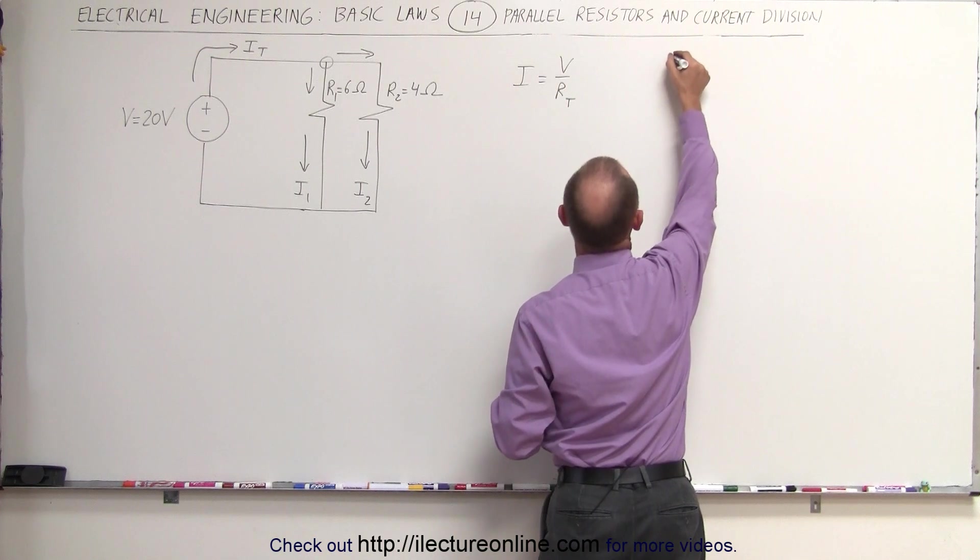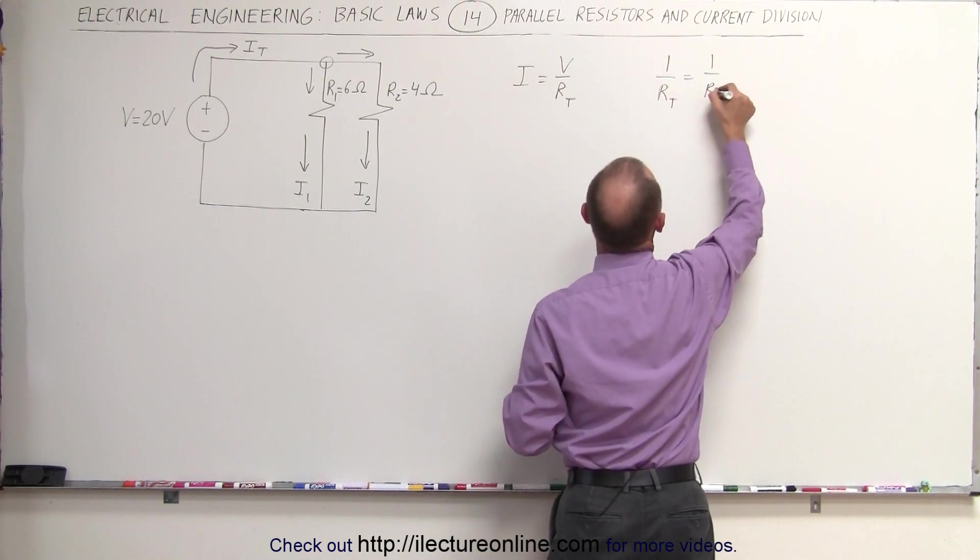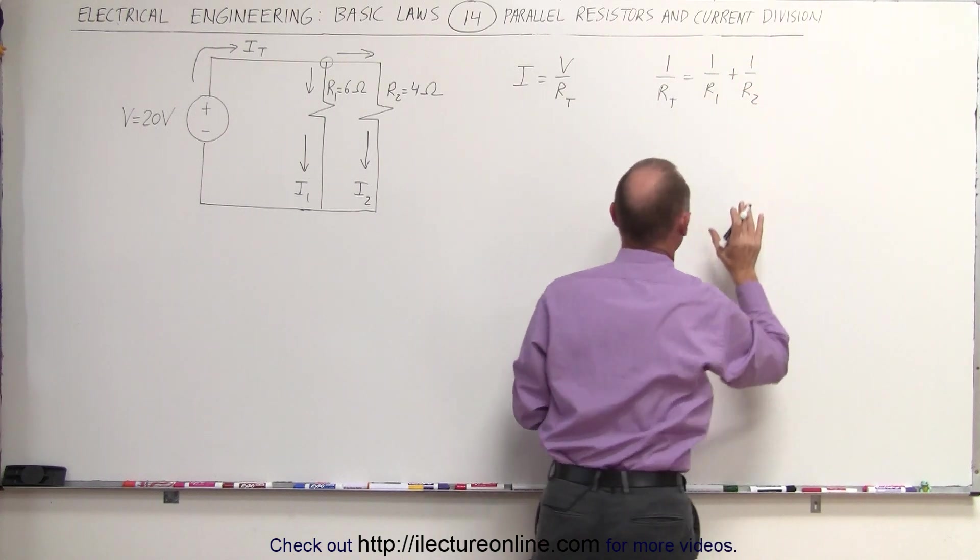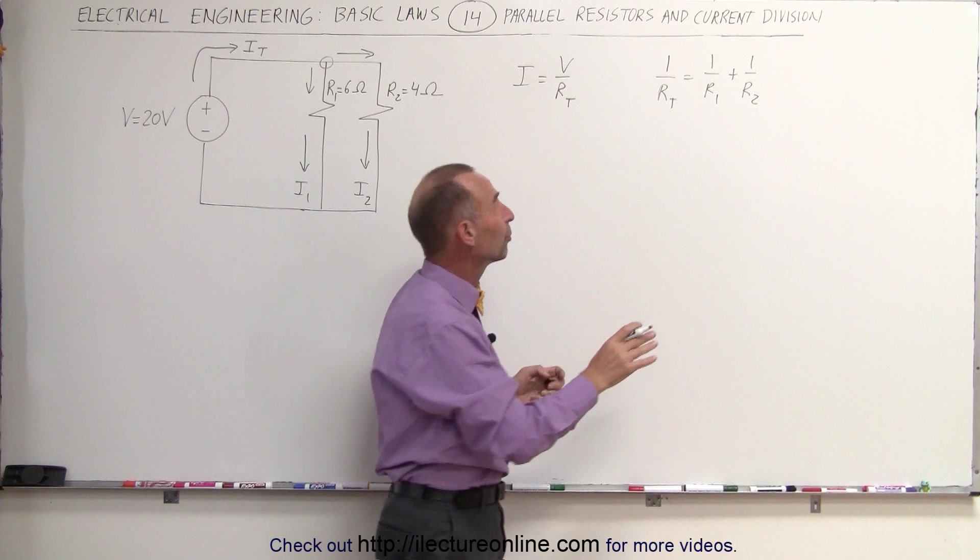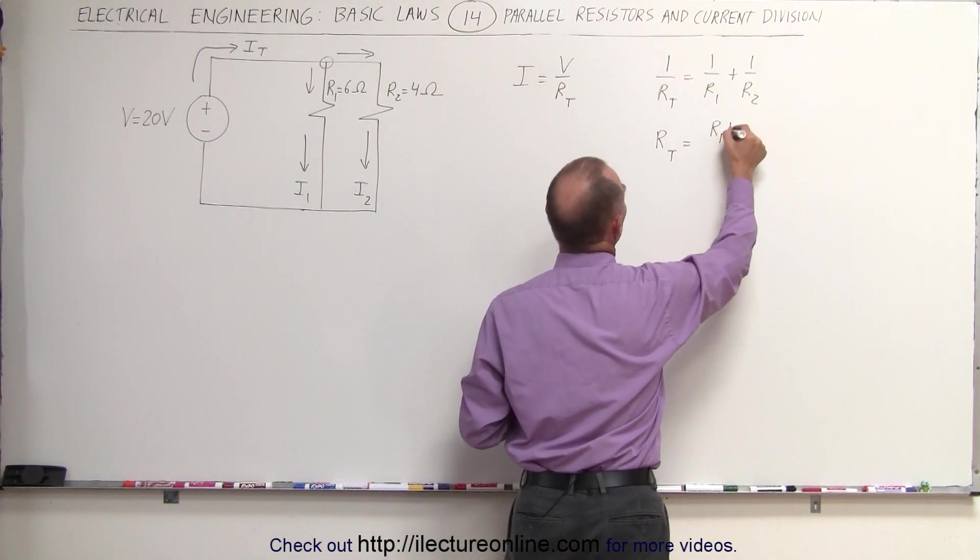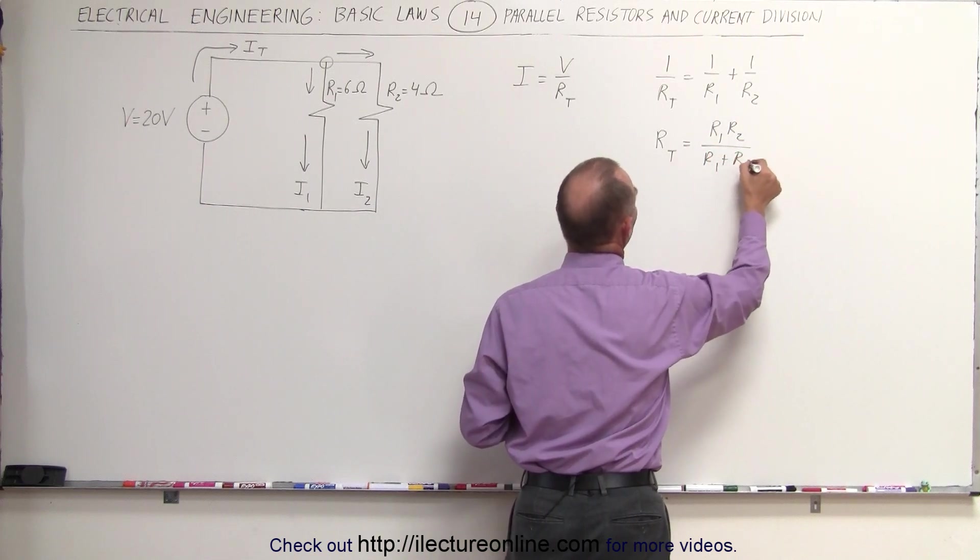R total can be found by saying 1 over R total equals 1 over R1 plus 1 over R2. Or, since there's only two resistors, we can simplify that algebraically into R total is equal to the product of the two resistors divided by the sum of the two resistors.